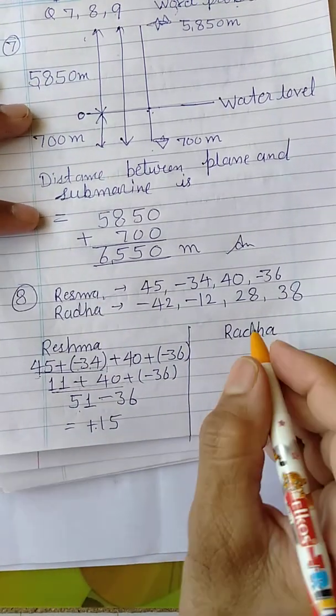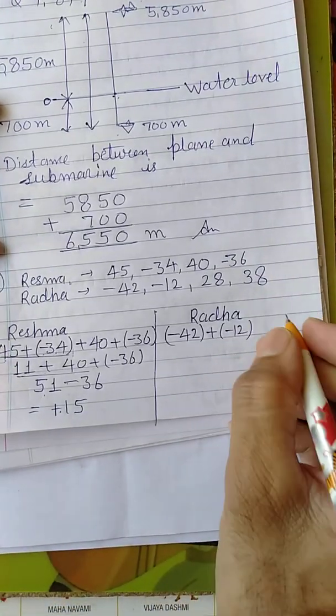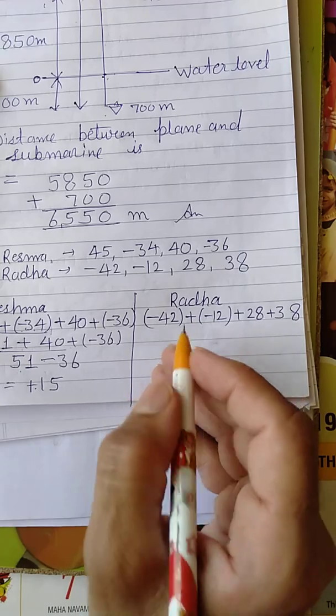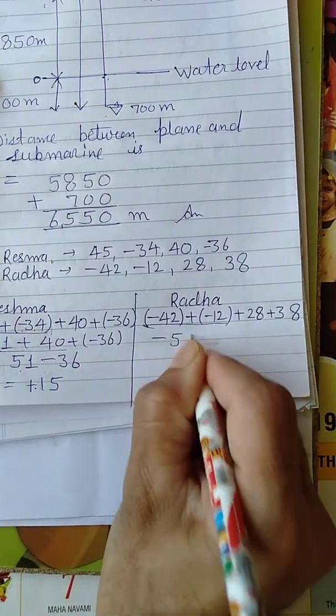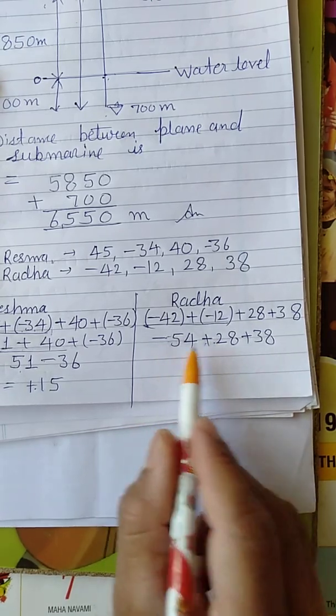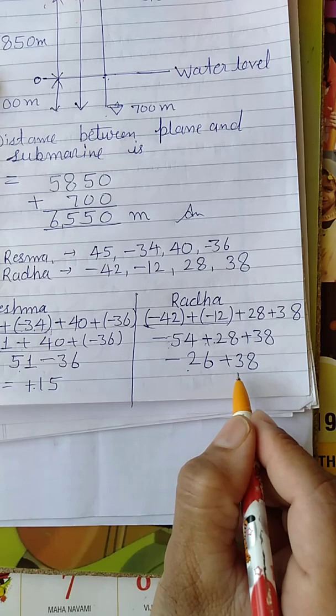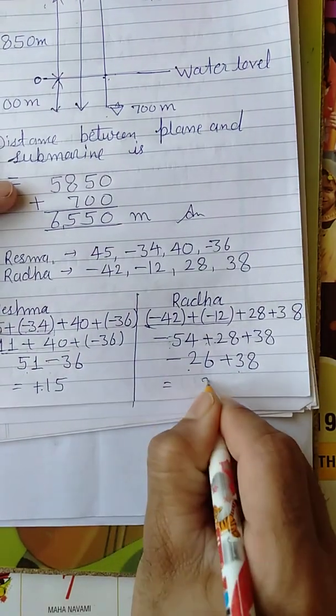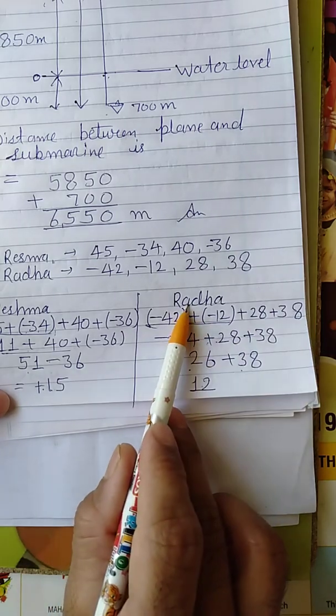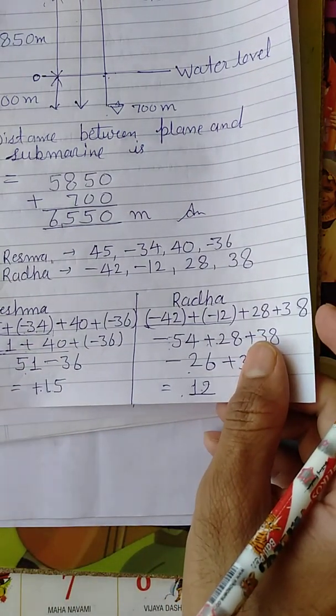Now for Radha, we will solve Radha score here. The total score will be minus 42 plus minus 12 plus 28 plus 38. Now add them. Minus 42 and minus 12 is equal to minus 54 plus 28 plus 38. Different signs are there, subtract them. Minus 54 plus 28 is equal to minus 26 plus 38. That equals 12. See whose marks are better. Radha scored less marks, Reshma scored more marks. Reshma scored 15. This was the solution of the question.